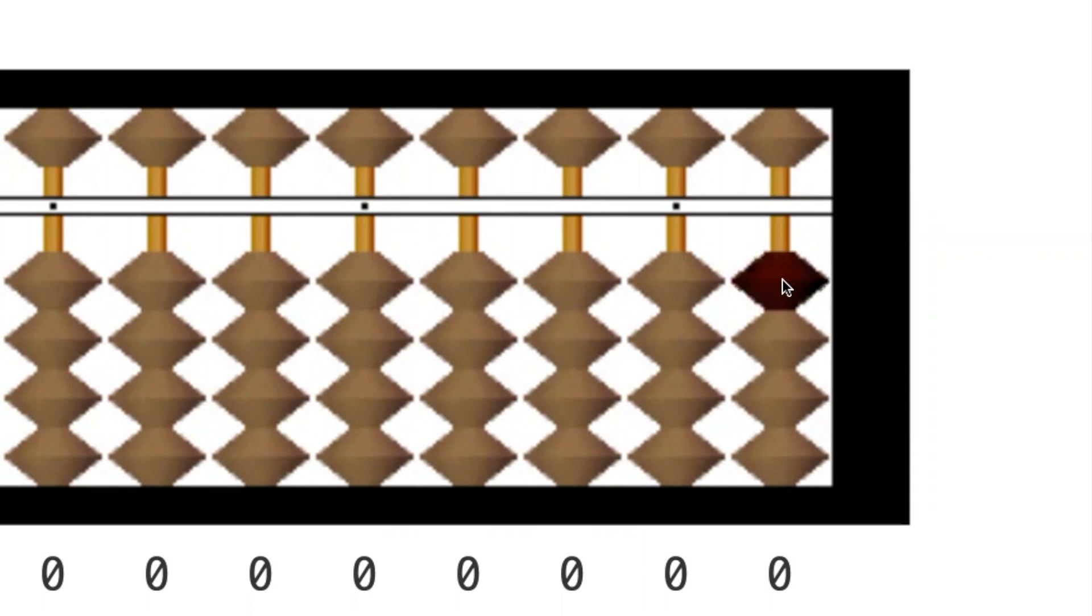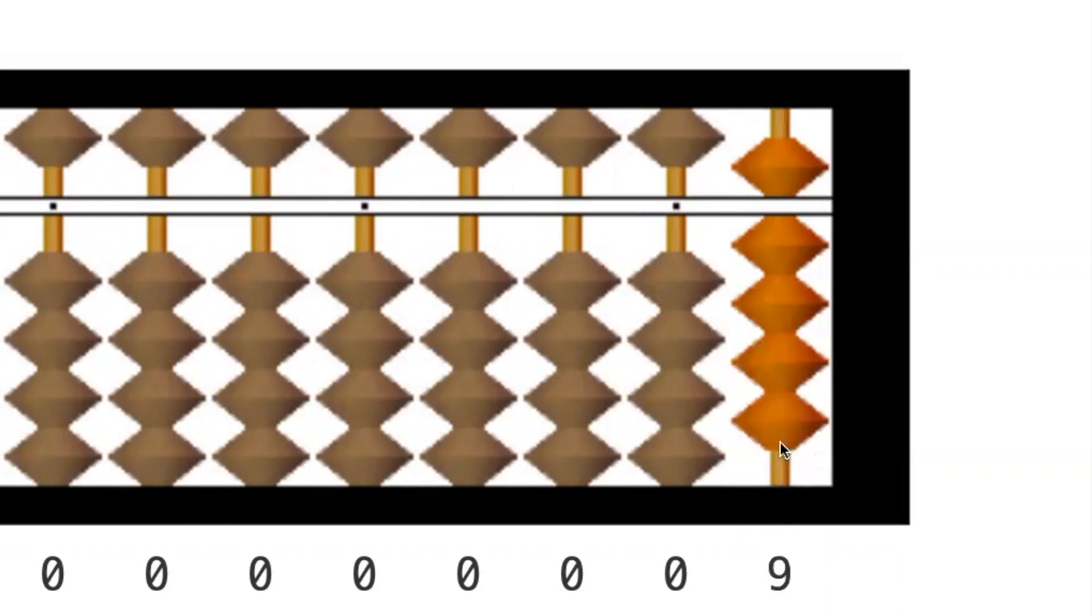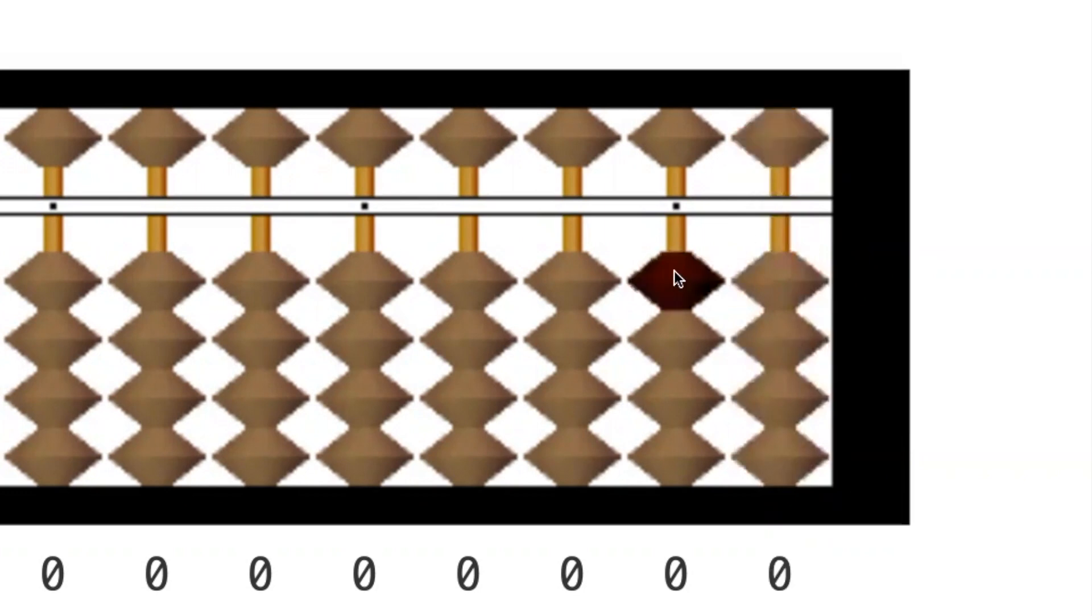Let's count to 20. 1, 2, 3, 4. The lower beads are used up. Let's move up to the upper bead. Clear the four lower beads and move down the upper bead. 5, 6, 7, 8, 9. Now, all beads are used up in this column. We have to move to the next column. Clear all the beads in this column. Move on to the next column. 10.